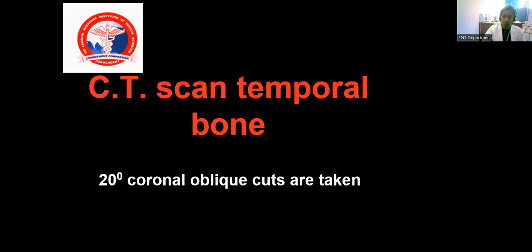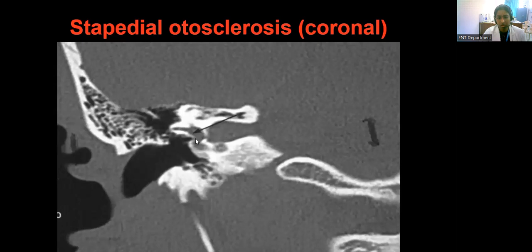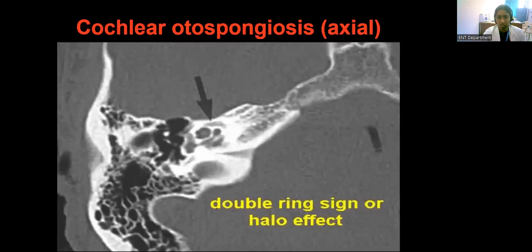For imaging, we perform high-resolution CT scan with coronal cuts at 0.5 mm and 20-degree coronal obliques. This shows the otosclerotic focus in the oval window as thickening due to mineralization or dense deposition of bone in the temporal bone coronal section. Cochlear otospongiosis means otosclerosis is present over the bony labyrinth of the cochlea, around the promontory and round window, seen as a dense bone also called the double ring sign or halo effect around the cochlea.